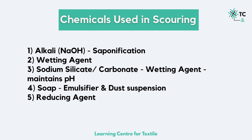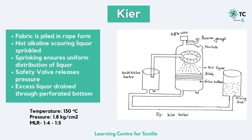The most common machine used is the kier, and hence scouring is also known as kiering. In a kier vessel, the fabric is piled up in rope form and then hot alkaline scouring liquor is sprinkled from the top and circulated throughout the fabric. Spraying of the solution ensures uniform distribution of the liquor. The temperature is maintained at around 130°C, pressure at 1.8 kg per cm², for 8 to 10 hours. The material to liquor ratio is kept between 1:4 and 1:5. There is a safety valve which releases extra pressure in the form of steam.